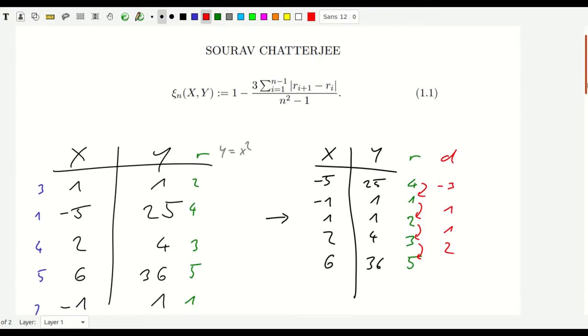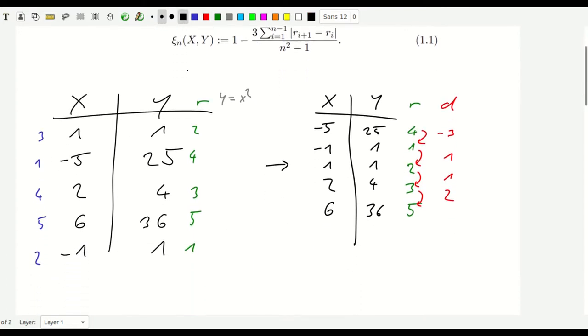And for me, I think it's more evident what's going on here if we say if we call it like that. So xi is one minus three times the sum of these differences d. And it's not just the sum of the differences but rather the sum of the absolute value. So something like that divided by the total number of entries that we have. So it's five squared minus one. Okay.